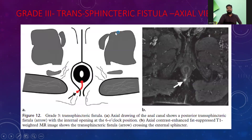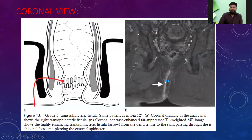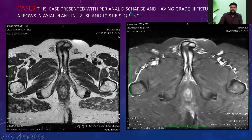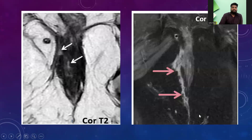Grade 3 is the transsphincteric fistula, seen in the axial view, crossing both the internal and external sphincters. In the coronal plane we can see this as well. This is the actual patient that presented with perianal discharge having a Grade 3 fistula, as seen marked by the arrows in the axial sections.